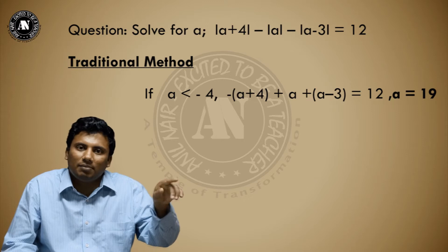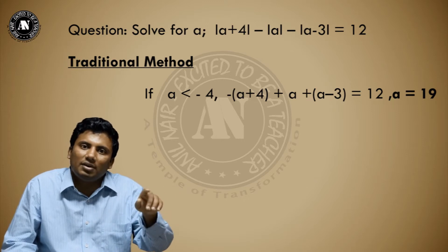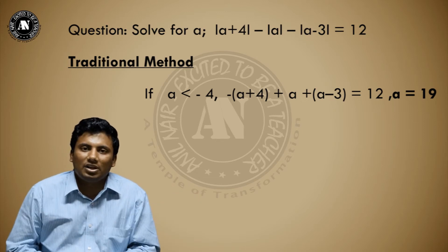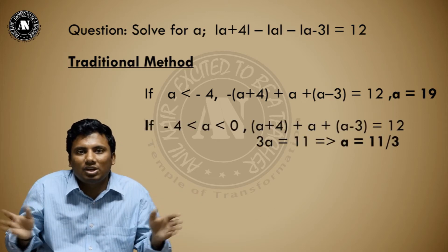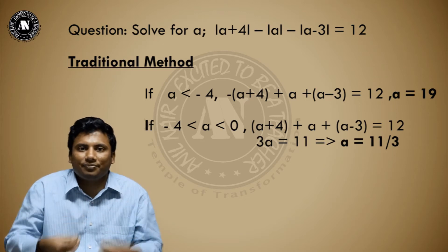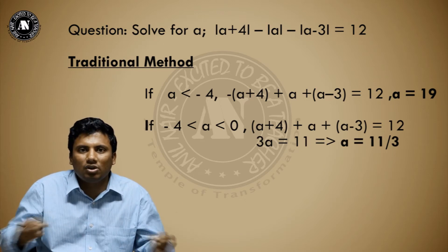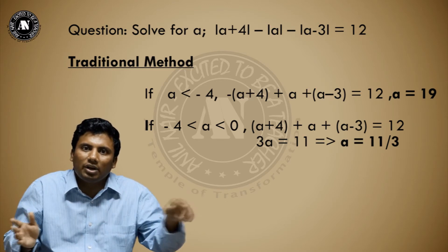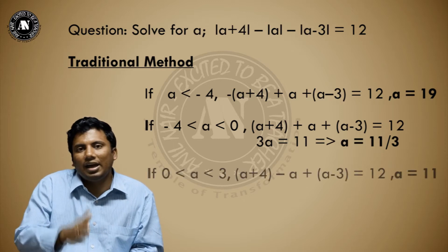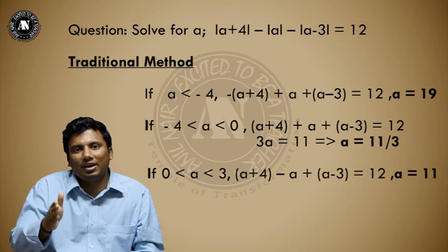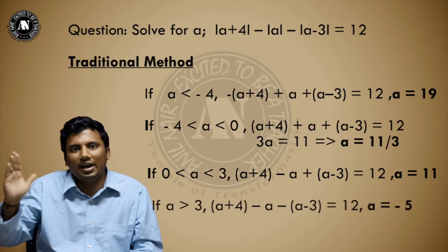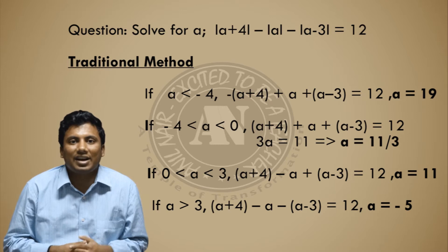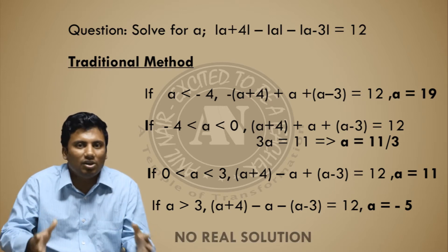For each case, all expressions will have a minus sign applied. For example, minus of (a + 4) minus of (minus a) minus of (minus a + 3) equals 2L, and you solve for the corresponding value of a. Similarly work through each interval. However, in every case the answer violates the condition imposed on the number line, so there is no solution.